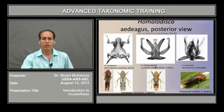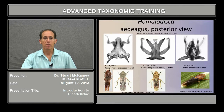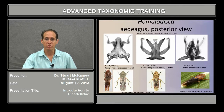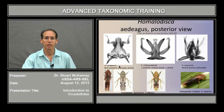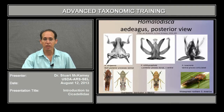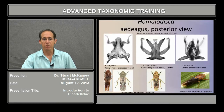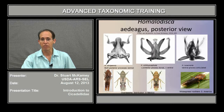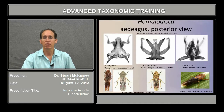Now we'll look at three very similar species in Homalodisca. Vitripennis, which is the glassy-winged sharpshooter, is a vector of Pierce's disease in California and the southeastern US. It's almost indistinguishable externally from ichthyocephala, but if you look at the aedeagus, in vitripennis these two posterior processes are both ventral, whereas in ichthyocephala there's one dorsal and one ventral pair. So they're very distinct in the genitalia but almost indistinguishable externally.